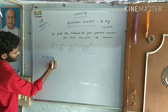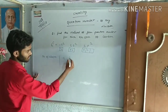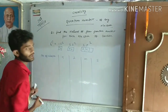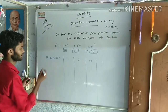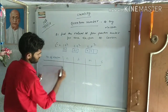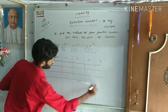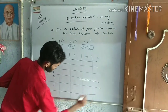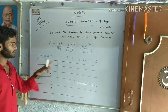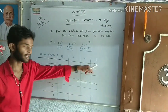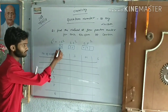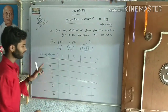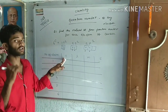Carbon का electronic configuration है: 1s², 2s², 2p². अब एक table बनाएंगे जिसमें columns होंगे: Number of electron, Principal quantum number N, Azimuthal quantum number L, Magnetic quantum number M, और Spin quantum number S। Electrons को 1 से 6 तक number करेंगे।